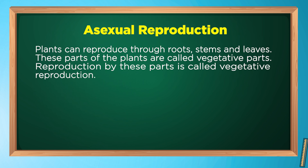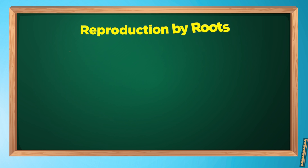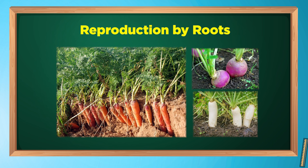This type of reproduction is called vegetative reproduction. Let's discuss reproduction by roots. In some plants, roots help in reproduction and they can develop into a new plant. Roots of dahlia and asparagus can develop into new plants.